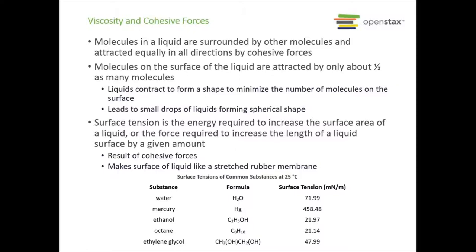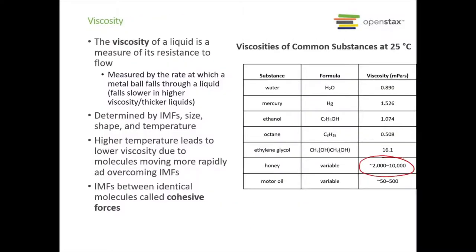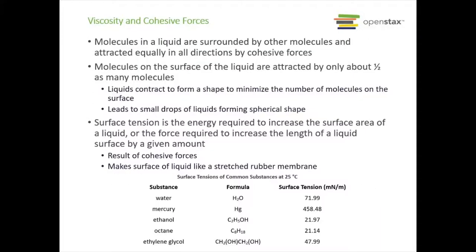There are some examples of surface tensions of some common substances at 25 degrees Celsius. Water has a surface tension around 71.99 millinewtons per meter. Compare that to mercury with a much higher surface tension of 458.48 millinewtons per meter. Water actually has a higher surface tension than ethylene glycol at 47.99, and ethylene glycol's viscosity is actually a lot higher than water at 16.1. So they don't necessarily track perfectly together.